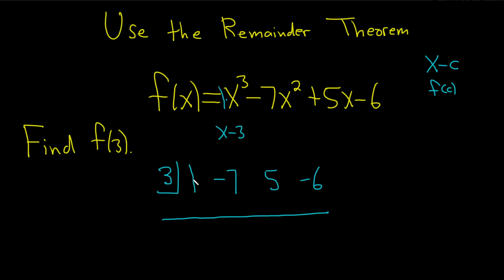The first step is to take this and bring it down. So when we bring it down, we get 1. And then we multiply. 1 times 3 is 3. And then we add these and we get negative 4.